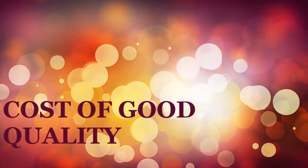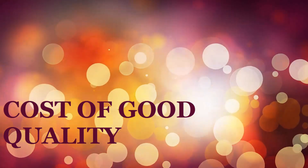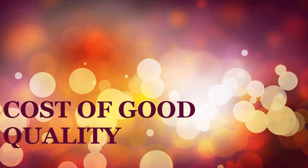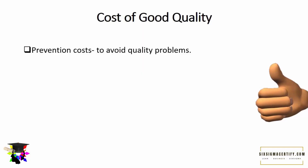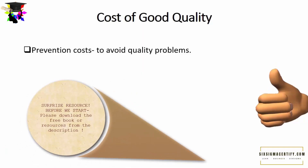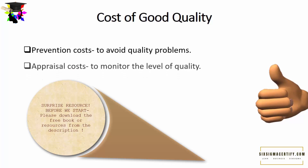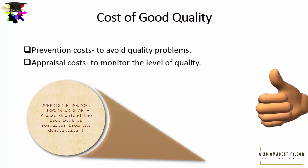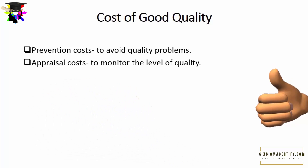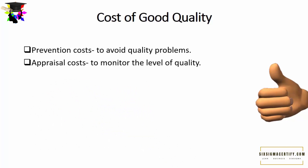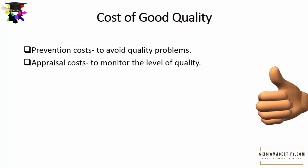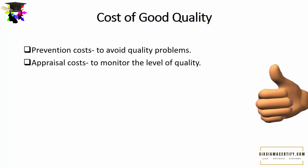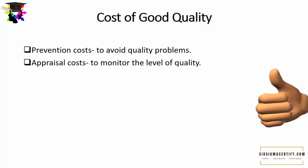In this lecture we are going to study about different costs of good quality. We will learn about the prevention costs, which are the costs to avoid quality problems — costs which are incurred in solving quality problems and making products or services better. There are also appraisal costs, which are used to monitor the level of quality and are generally used for quality control.